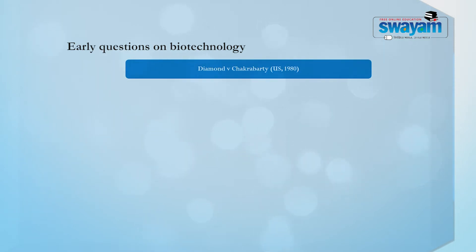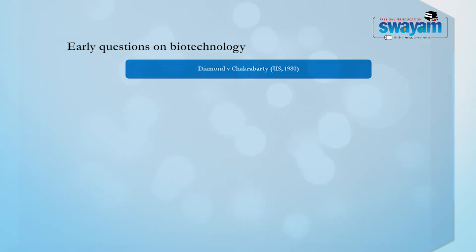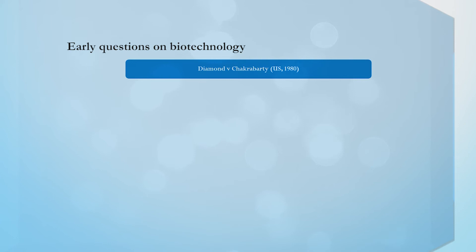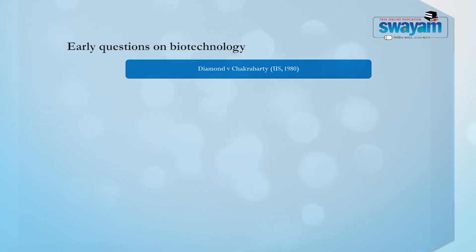The question in this case was whether a genetically modified organism produced by the defendant was patentable or not. Anand Chakraborty, a scientist, invented a genetically modified organism which was able to break crude oil. So when there were oil spills and if these organisms were released in the wild, this could actually break the crude oil and settle it down. This was a great invention at that point in time and it went up to the Supreme Court.